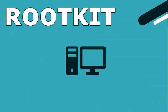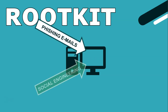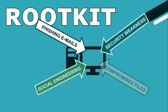Rootkits exploit vulnerabilities in a computer's operating system, applications, or firmware to gain initial access. This can occur through phishing emails, social engineering, exploiting security weaknesses in the network, or downloading compromised files or software — like in the Sony story mentioned.